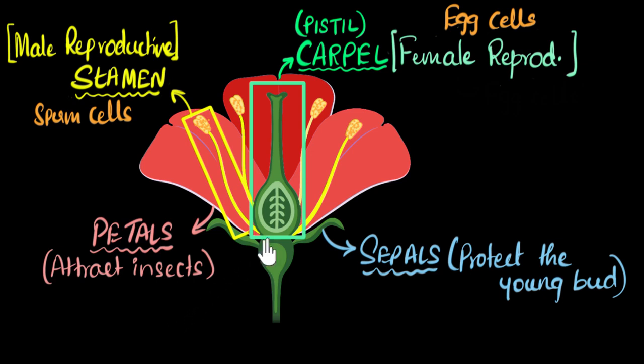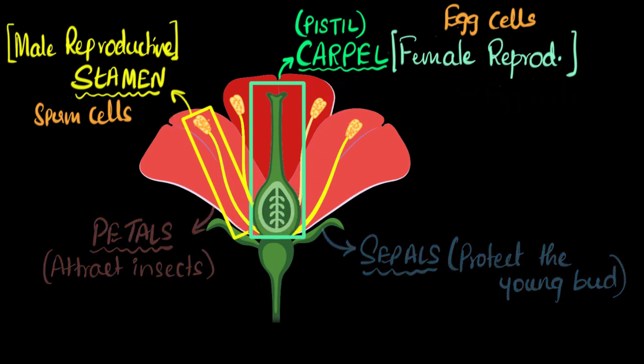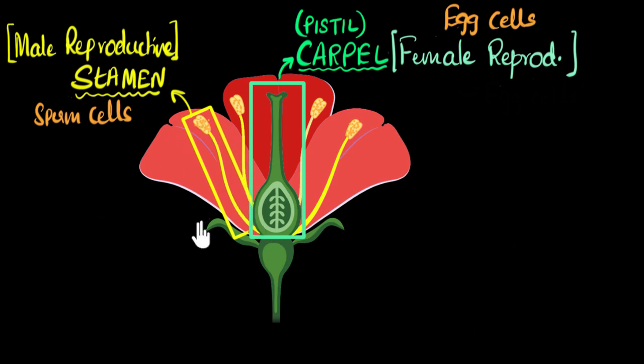So over here, let's only focus on the reproductive parts, the carpel and the stamen. So let me get rid of these others. All right, so let's start with the stamen.